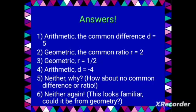For the answers: number one is arithmetic — the reason is the common difference of 5. Number two is geometric — the reason is the common ratio of 2. For numbers five and six, the sequence is neither arithmetic nor geometric, so you can say 'none' or 'neither.' For a sequence to be considered arithmetic or geometric, it must have a common difference or a common ratio respectively.